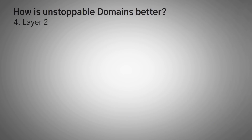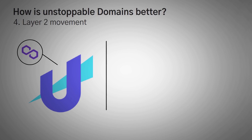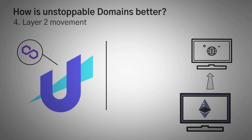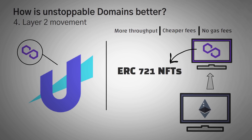Lastly, they're moving to Layer 2. Unstoppable Domains is actually launching on Polygon soon, meaning they're moving from the main Ethereum network to a Layer 2 network which will allow much more throughput and way cheaper fees. Technically, you won't have any gas fees at all to pay for minting an address, other than the very first origination fee. The domains will actually be ERC-721 NFTs on the Polygon network, which means you can also trade or sell them, and you can view them on OpenSea.